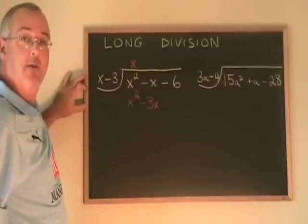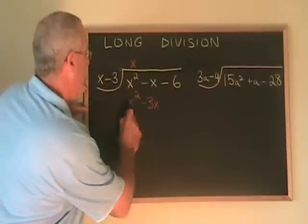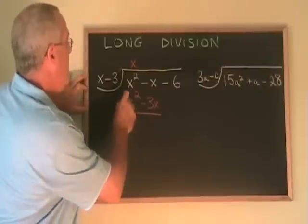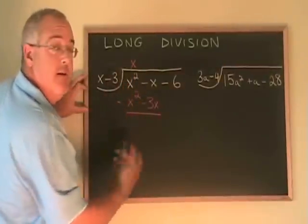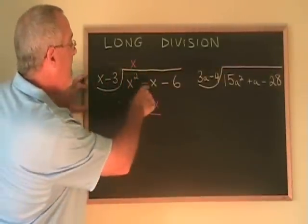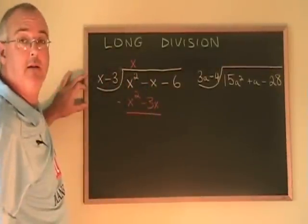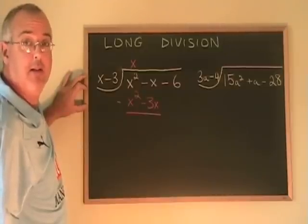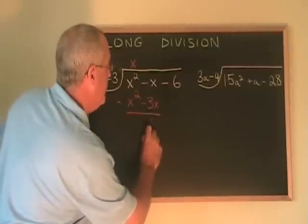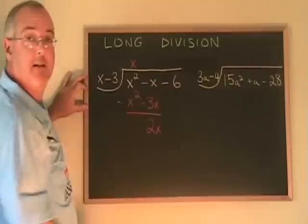And now, just like in regular long division, we subtract. x squared minus x squared is zero. It cancels. x minus negative 3x is equal to negative x plus 3x, which is 2x. And the minus 6 carries down.